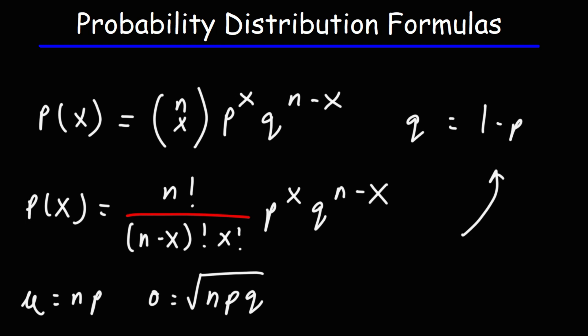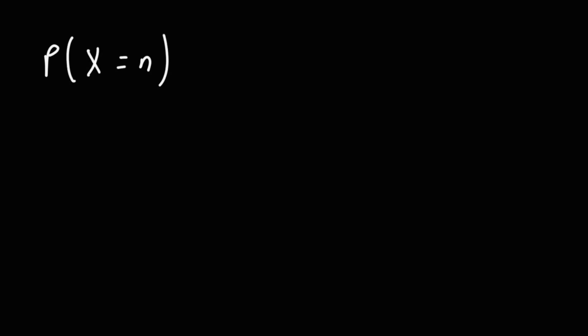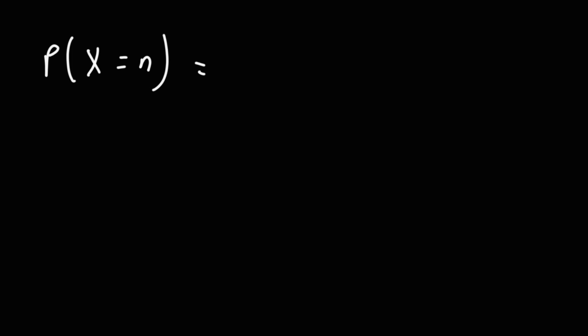Now let's move on to a geometric distribution. This represents the probability that the nth event will succeed — n is the number of the first successful trial. For instance, if x equals 4, you're looking for the probability that the fourth event will be successful. That means the first three events will fail, so it's going to be Q to the n minus 1 times P.